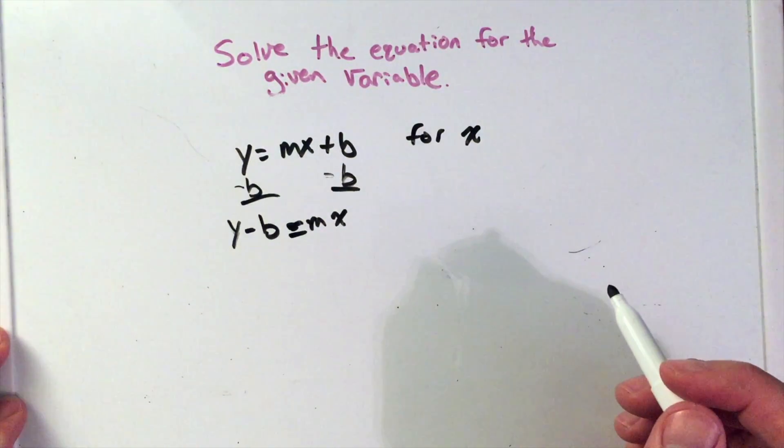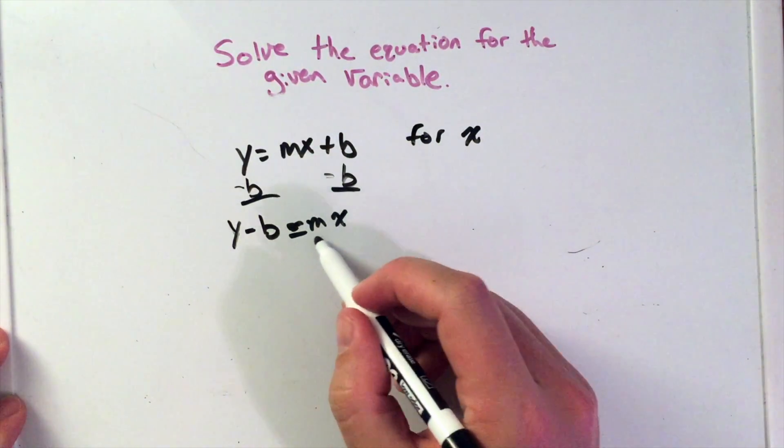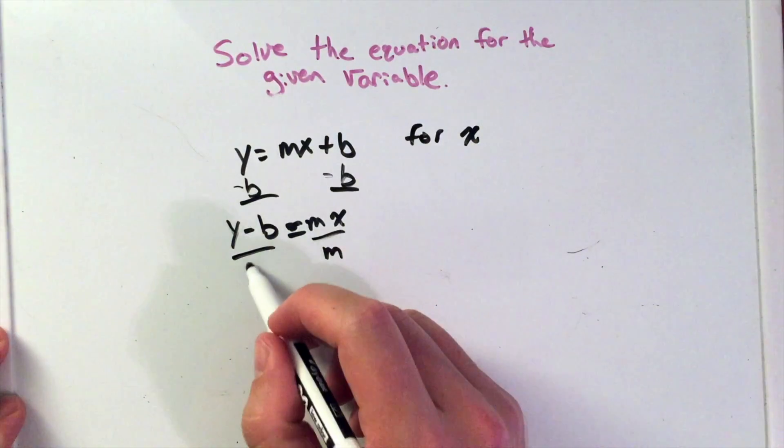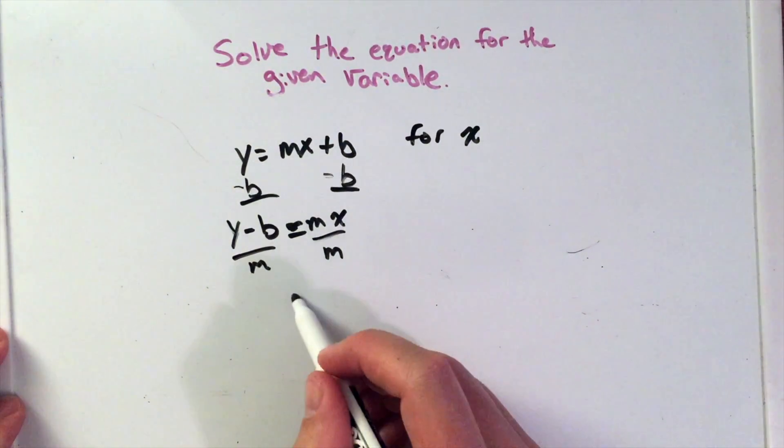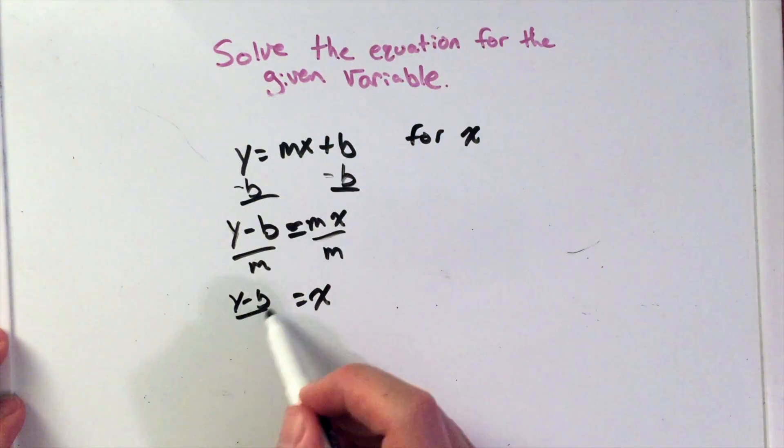Well, we have m times x, so the opposite of multiplication is division, so I'm going to divide by m on both sides, and now I am left with x equals y minus b over m.